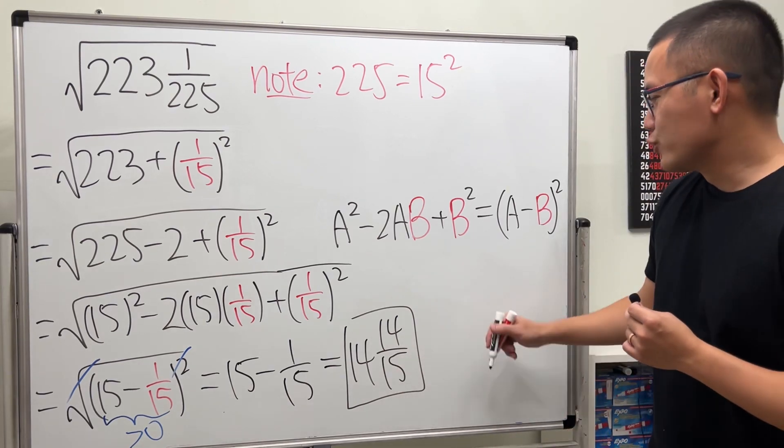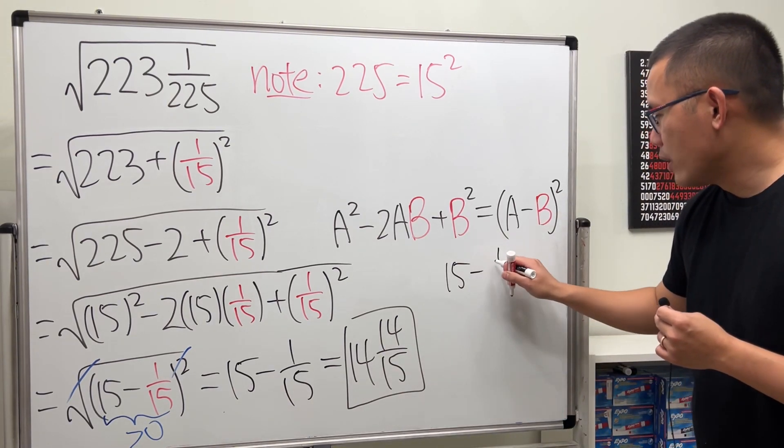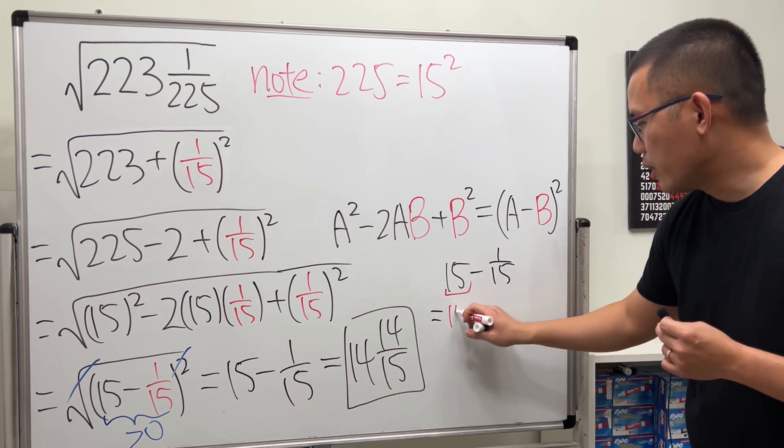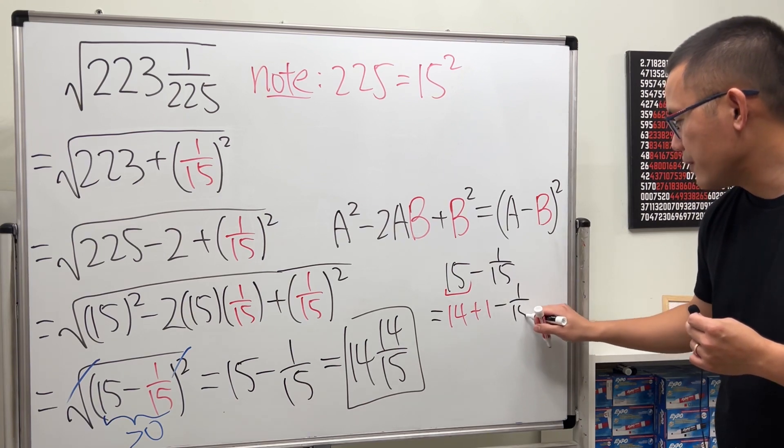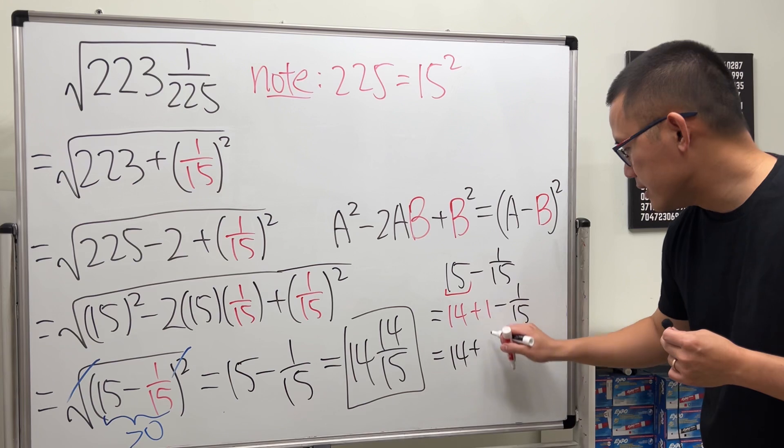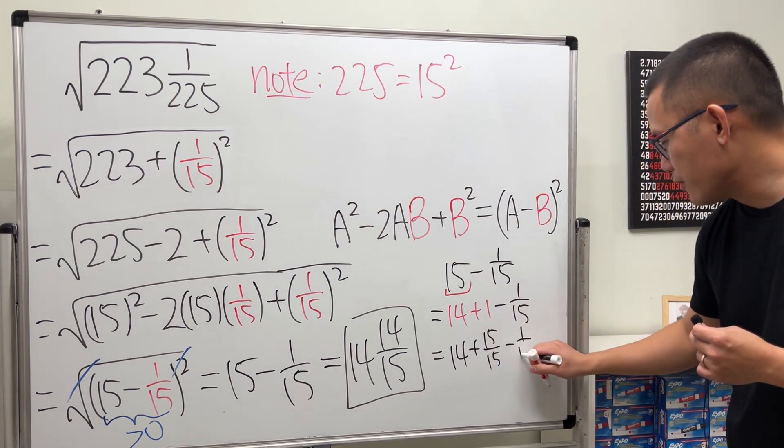And here, let me just do a super quick review. If we have 15 minus 1 over 15, we can look at the 15 as 14 plus 1. And then, after that, we have minus 1 over 15. And then, this right here is the same as saying 14 plus this is 15 over 15. And then, minus this, 1 over 15.